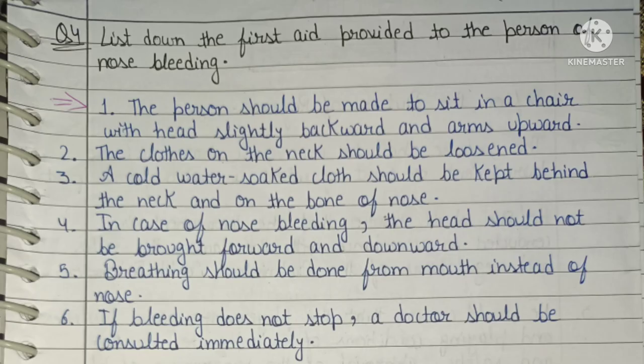Question four: list down the first aid provided to a person with nose bleeding. First, the person should be made to sit in a chair with head slightly backward and arms upward. Second, the clothes on the neck should be loosened. Third, a cold water-soaked cloth should be kept behind the neck and on the bone of the nose. Fourth, the head should not be brought forward and downward. Fifth, breathing should be done from the mouth instead of the nose. Sixth, if bleeding does not stop, a doctor should be consulted immediately.